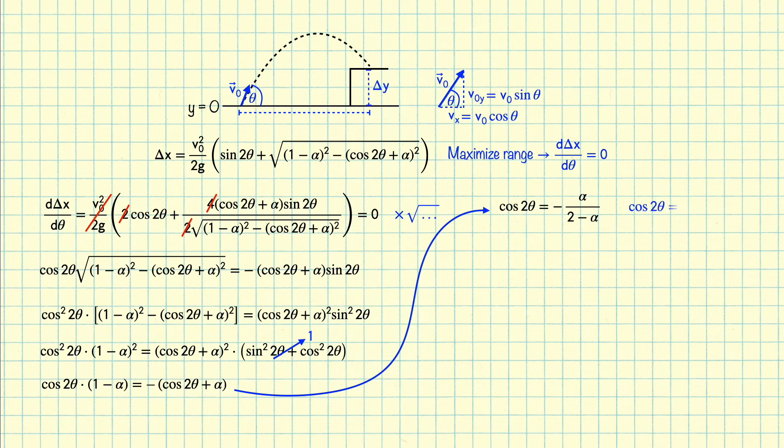Now we can rearrange and solve for cosine 2 theta. Now I'm going to make use of the double angle formula for cosine once again to get an expression for sine squared theta. All that's left to do is take a square root to get that sine theta that maximizes the range is equal to 1 over the square root of 2 minus alpha, remembering that alpha is equal to 2g delta y over v0 squared, which is essentially a proxy for the height of the receiver relative to the thrower.